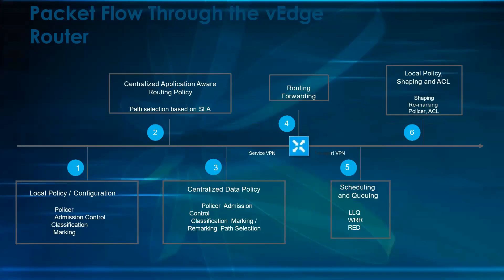For packet flow through the vEdge router, the first step is local policy configuration — policy administration, control, classification, and marking, such as ACLs or packet-based marking. The second is the centralized application-aware routing policy — path selection based on the configured SLA. Third is the centralized data policy — something being done from the vSmart as a policy or administration control. Classification and marking from the vSmart would overwrite the policy implemented on the local device.